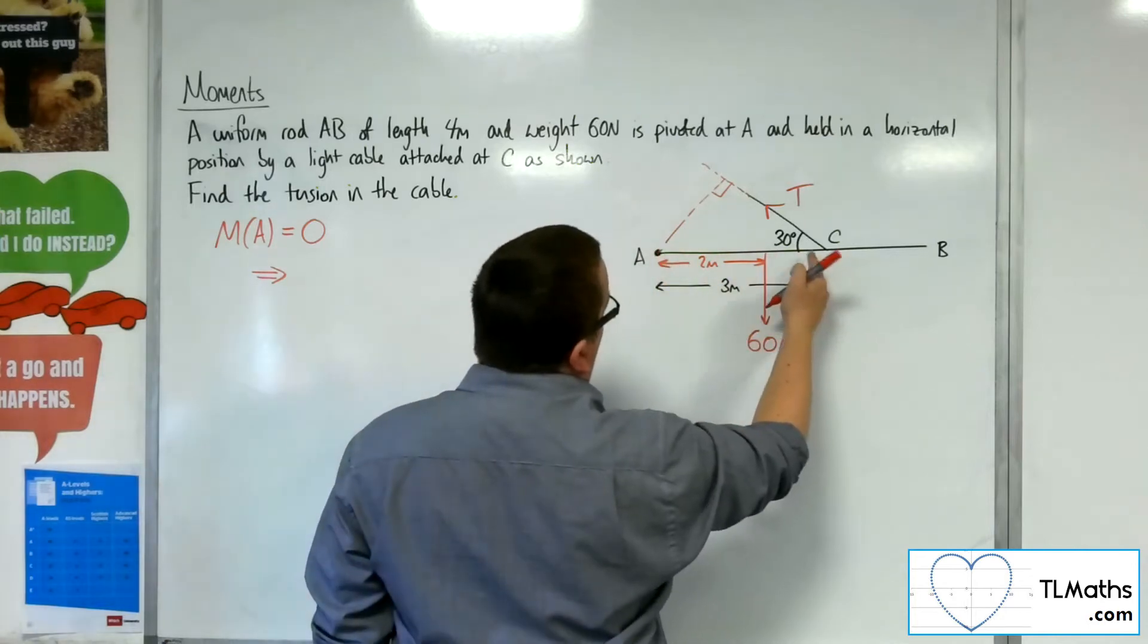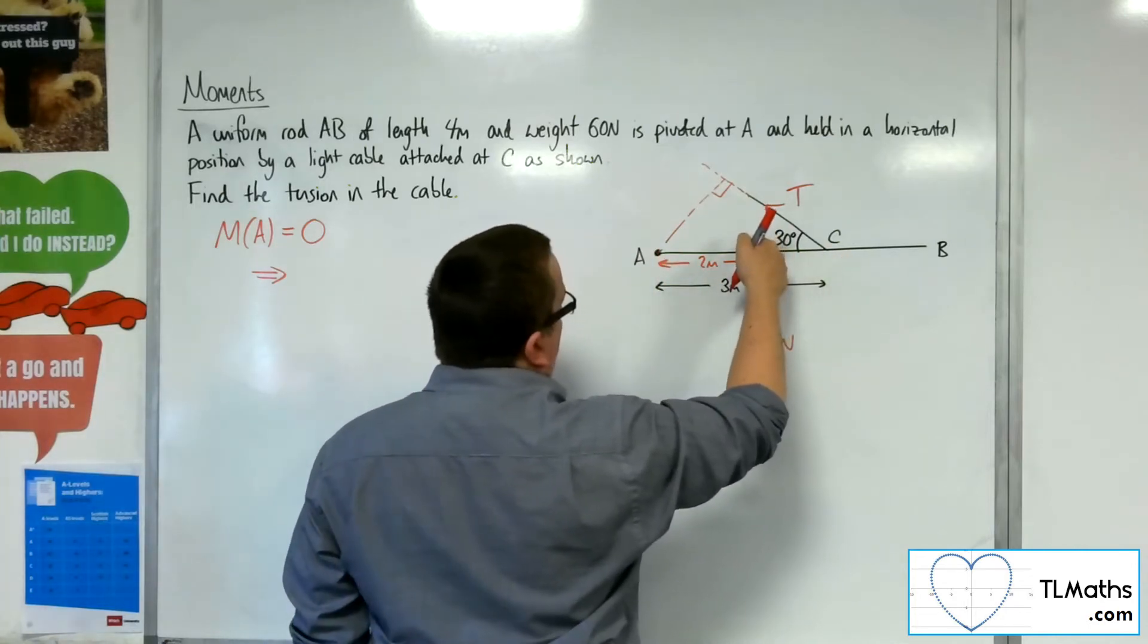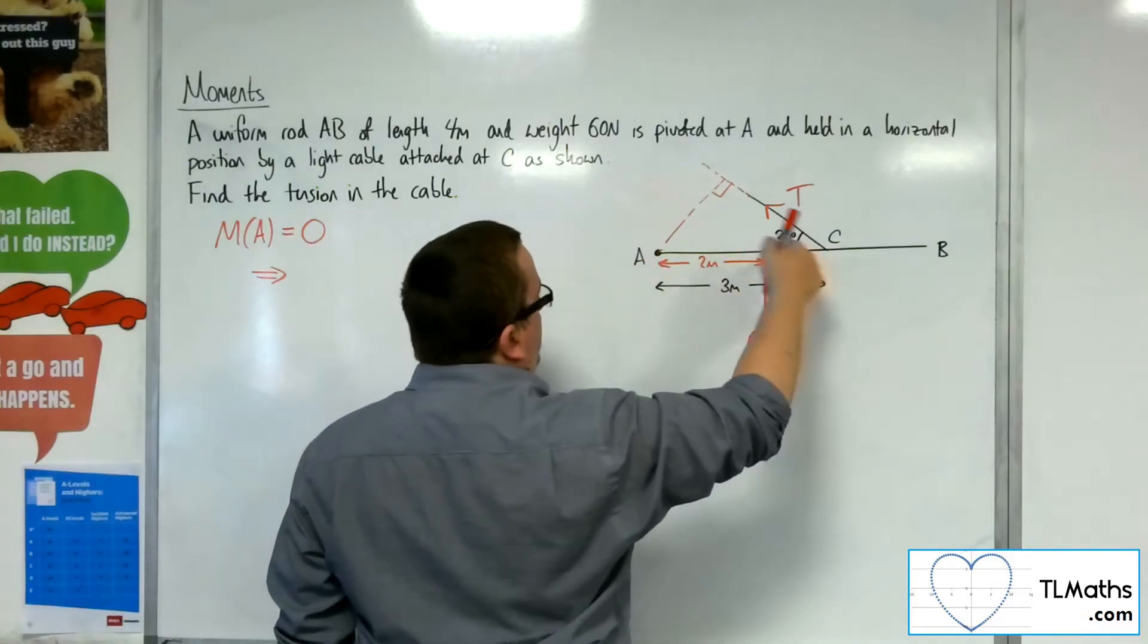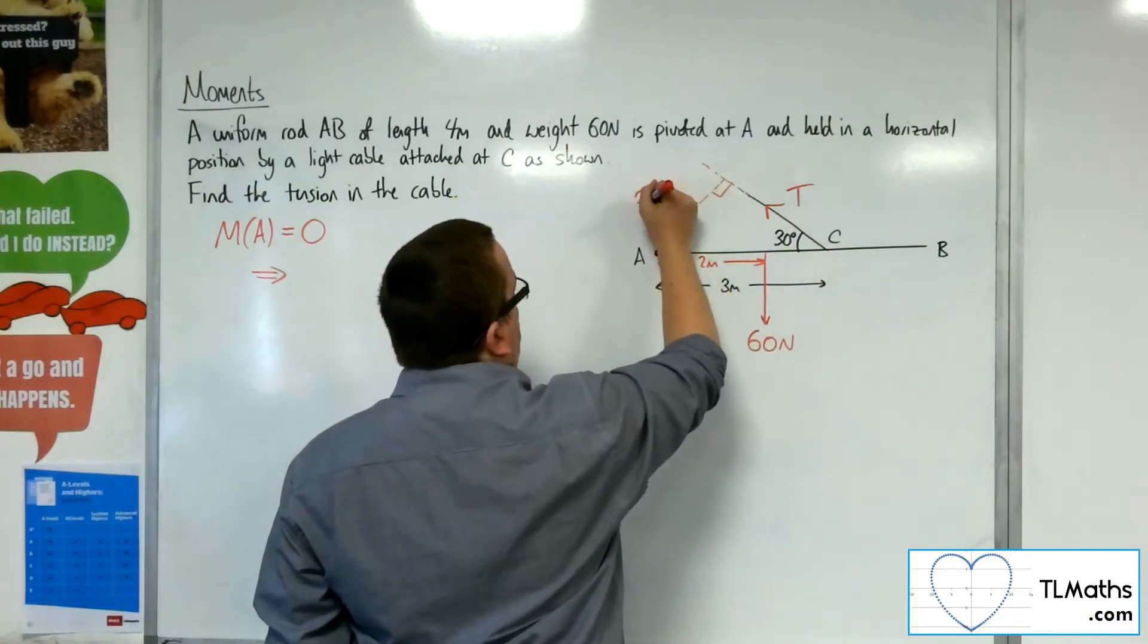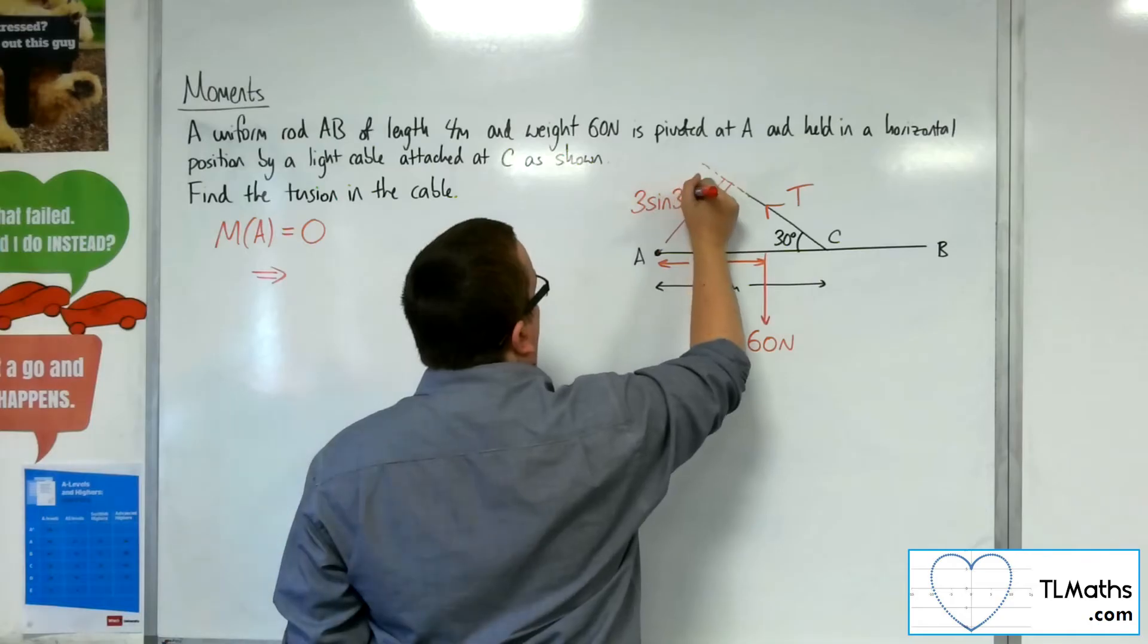If that's 3 meters and that's 30 degrees, that's the hypotenuse, this is the opposite, and so this will be 3 sine 30 degrees.